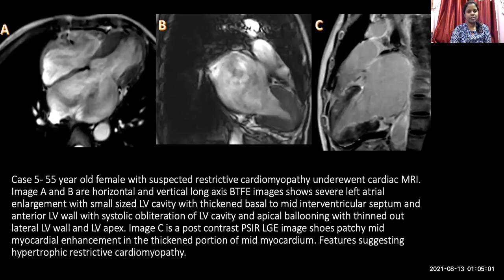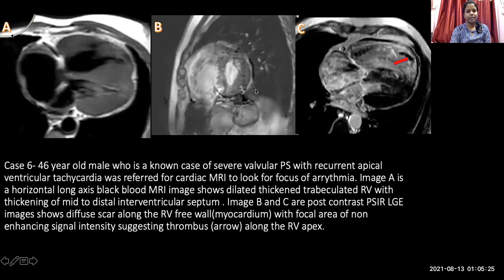A 55-year-old female with suspected hypertrophic cardiomyopathy underwent cardiac MRI. Images A and B show severe left ventricular and atrial enlargement with a small LV cavity, thickened basal to mid-interventricular septum and anterior LV free wall, systolic obliteration of the LV cavity, apical ballooning, and a thinned out LV apex. The post-contrast image shows scar in the thickened portion of the myocardium. A 46-year-old male with severe valvular pulmonary stenosis and recurrent ventricular tachycardia underwent cardiac MRI to locate the focus of arrhythmia, revealing a dilated and trabeculated left ventricular wall with late gadolinium enhancement in the right ventricular free wall.